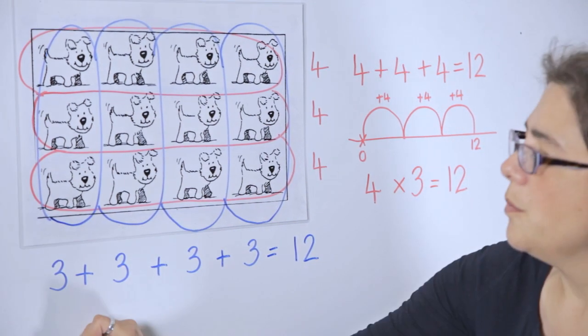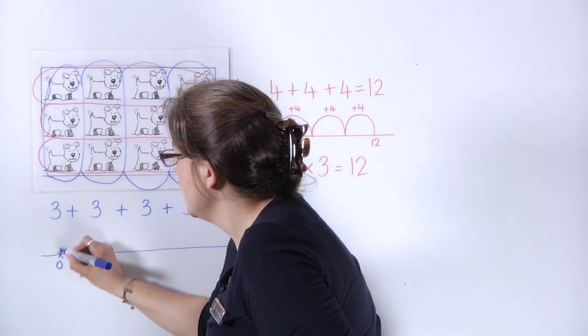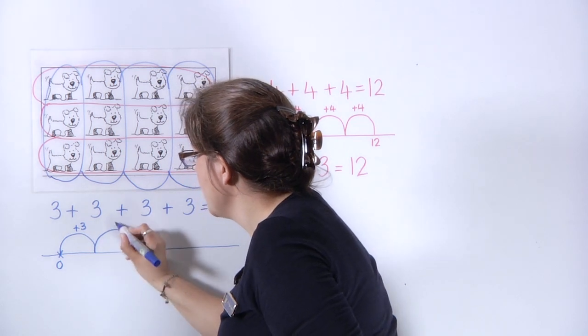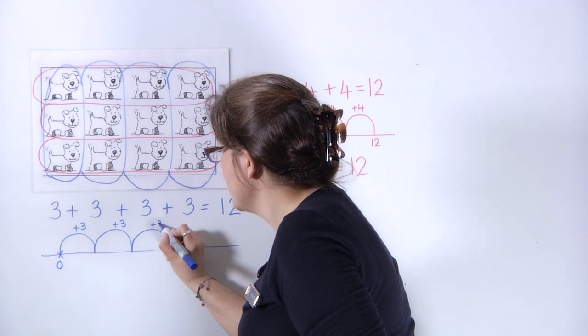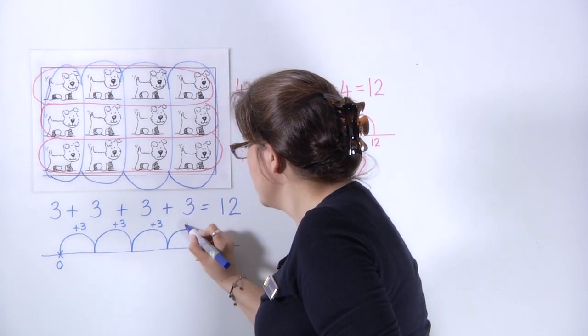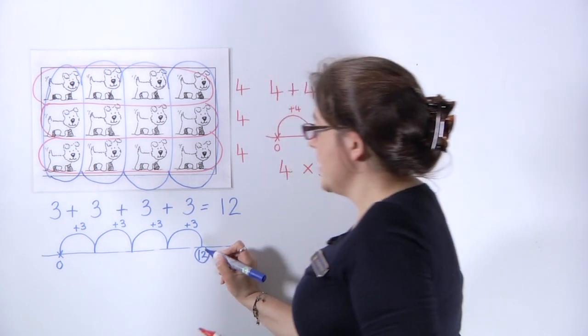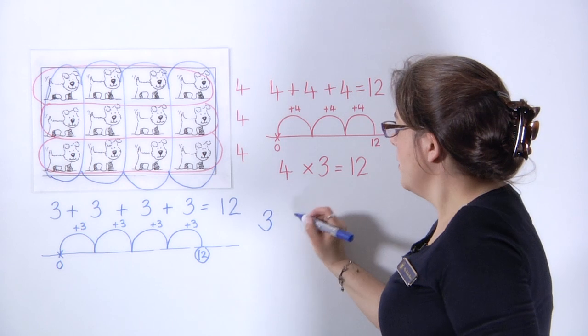And then we can think about the number line that that would be, three, showing each of the groups of three, as four jumps. And once again, that then shows the children that it is three, four times.